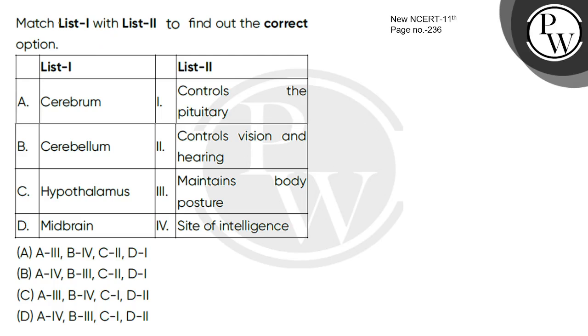Hello children, let's read this question. We need to find out the correct option by matching List-I with List-II. The brain parts given are: Cerebrum, Cerebellum, Hypothalamus, and Midbrain.